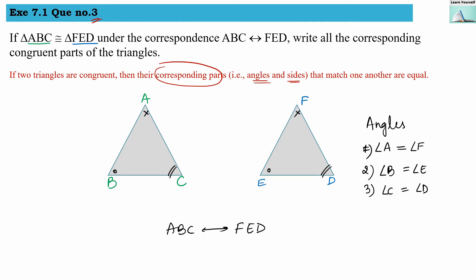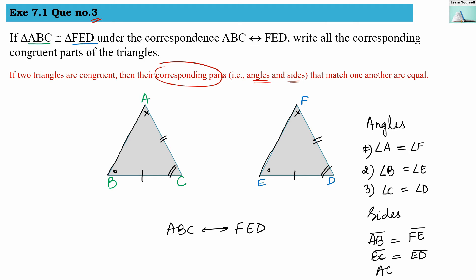When two triangles are congruent with each other, their corresponding sides are also equal. Corresponding side means: side AB corresponds to side FE, so AB = FE. The second side: BC = ED. And the third side: AC = FD. As per the question, we have to write all corresponding congruent parts of the triangle.